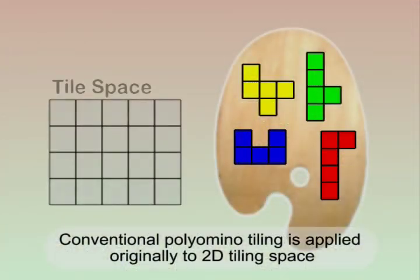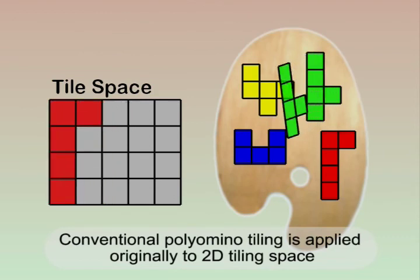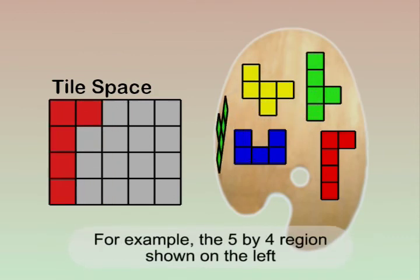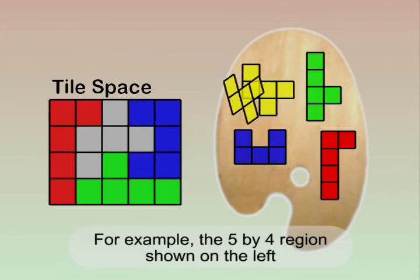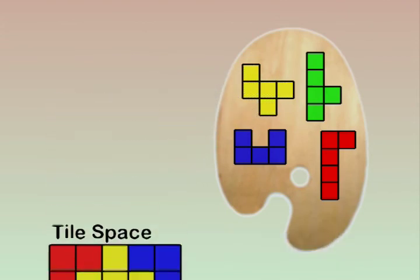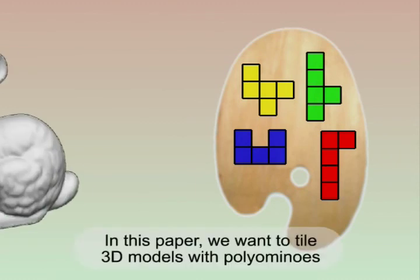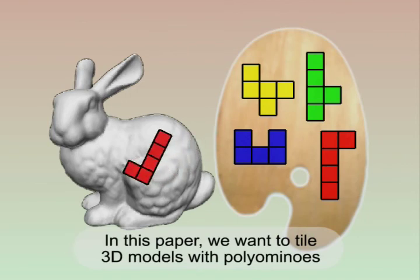Conventional polyomino tiling is applied originally to 2D tiling space — for example, the 5x4 region shown on the left. In this paper, we want to tile 3D models with polyominoes to create the 3D polyomino puzzle.